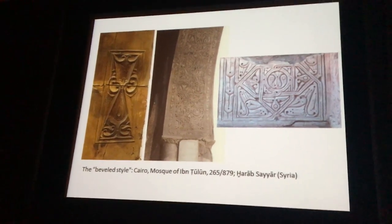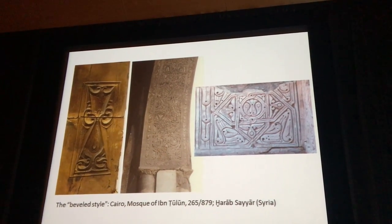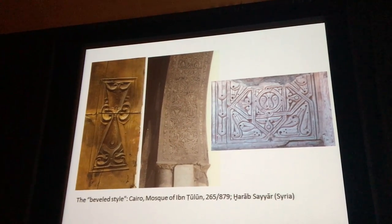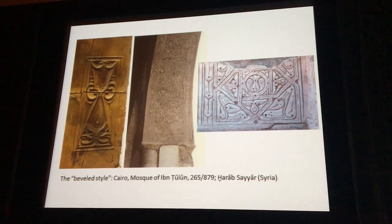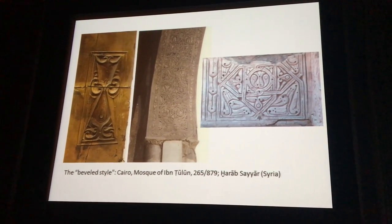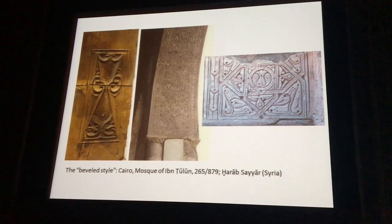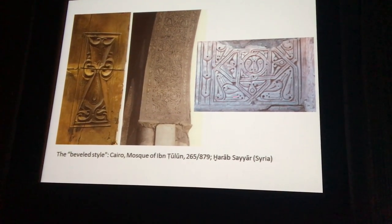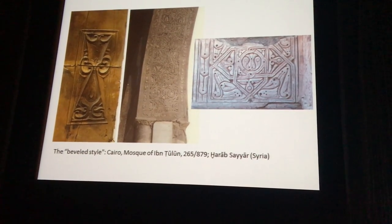The style C that we have just seen occurs in some variations in other monuments in other regions of the Islamic world. It can be found here combined with a geometrical star pattern in the ruins of Harab Sayar in northern Syria, which is actually more than Mesopotamia, but present-day state of Syria, where you can see these flowing lines of motifs in which one leaf is intimately connected with the other.